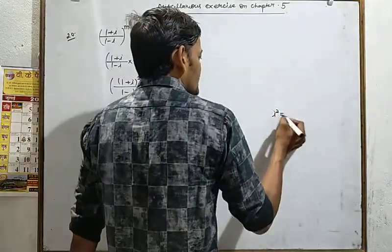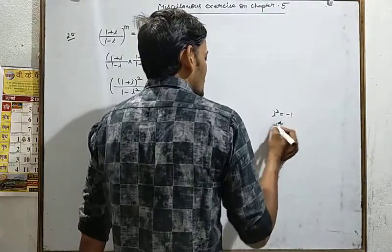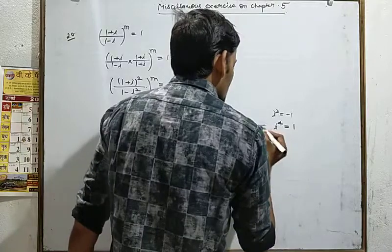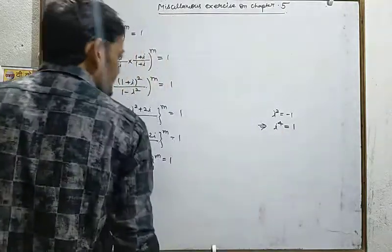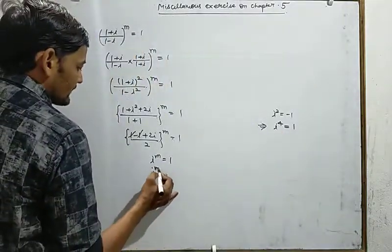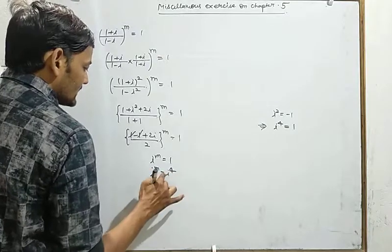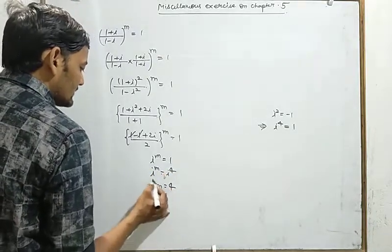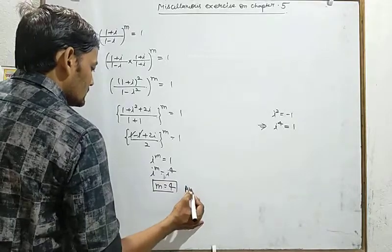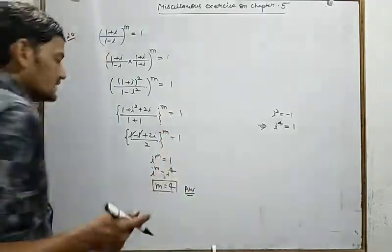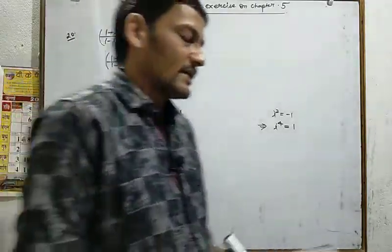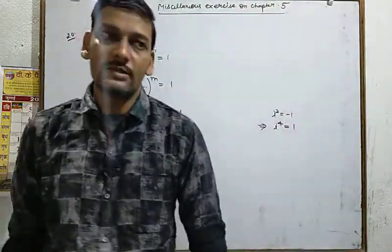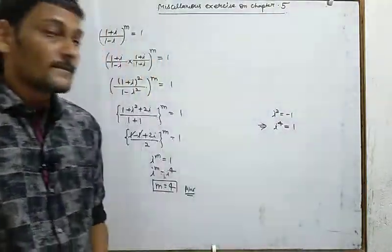We know i² = -1, so i⁴ = 1. Since i^m = 1 and i⁴ = 1, comparing bases we get m = 4. Therefore the least positive integral value of m is 4. This completes the miscellaneous exercise. Next video mein hum aage ki exercise discuss karenge. Thank you.